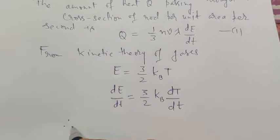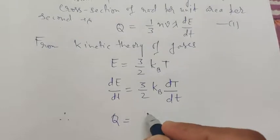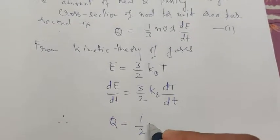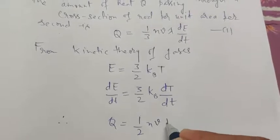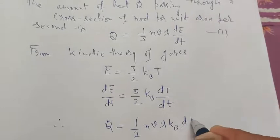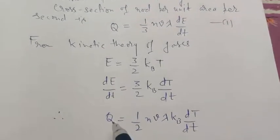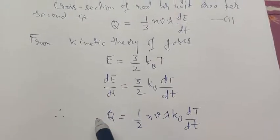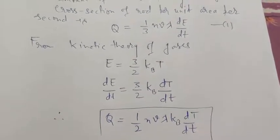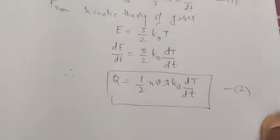Therefore the heat Q becomes (1/2) N V λ K_B times the rate of temperature change with respect to time. This is the amount of heat transferred from one end of the rod to the other.